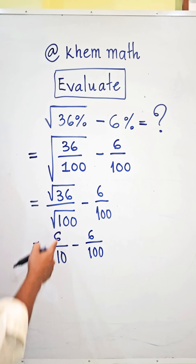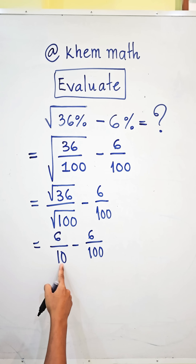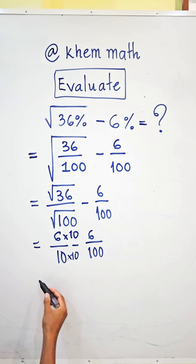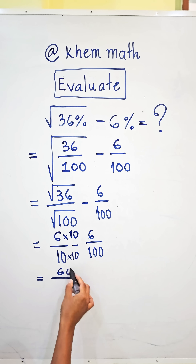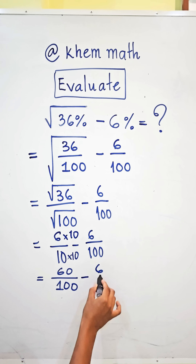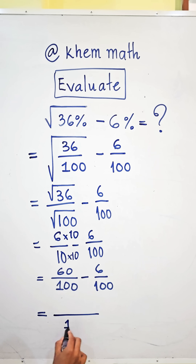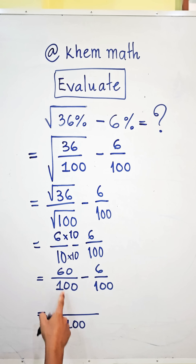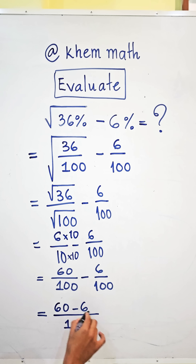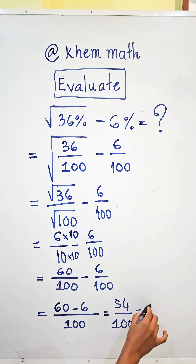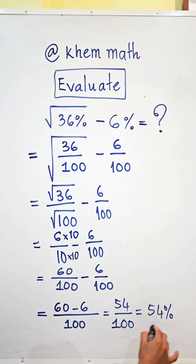To get a common denominator, we multiply 6 over 10 by 10 over 10, giving us 60 divided by 100. Now both fractions have the same denominator, so we subtract the numerators: 60 minus 6 equals 54. Therefore the answer is 54 divided by 100, which equals 54%.